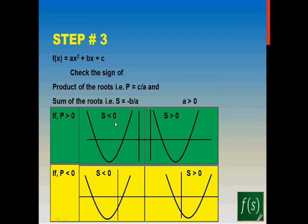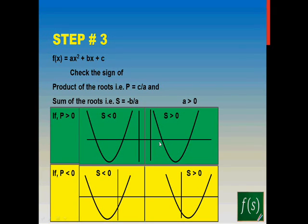Which side the roots lie on is decided by the sum. If sum is less than zero, both roots are negative. If sum is greater than zero and product is also greater than zero, both roots are positive. This is how your graphs will look in each case.